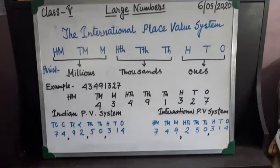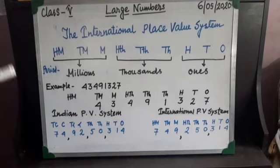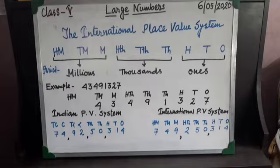But in the international place value system, commas come after every three digits. That means: ones, tens, hundreds — comma — thousands, ten thousands, hundred thousands — comma — and then million, ten million, and hundred million. I hope you understand the topic properly. Please revise it. Thank you.